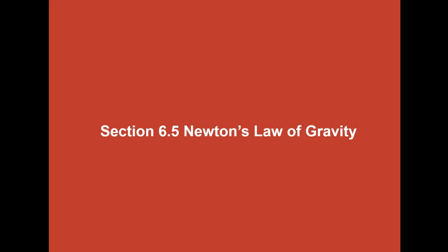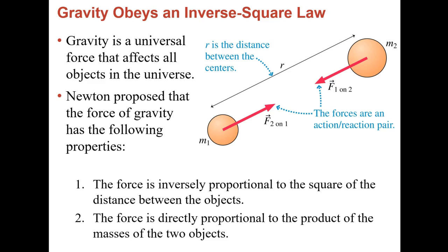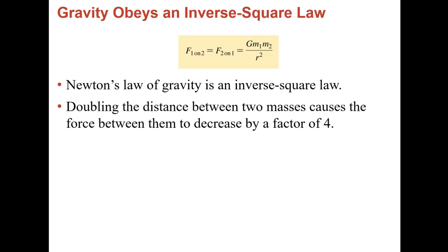Gravitational acceleration decreases as you get farther away — this is part of Newton's Law of Universal Gravitation (LUG). Gravity is the force that attracts all objects; they are force pairs, so the force from object 1 onto object 2 equals the force from 2 onto 1 — equal and opposite. They are inversely proportional to the square of the distance: if you double the distance, the force is 1/4 as much. They are also directly proportional to the product of the two masses: if you double both masses, the gravitational force quadruples.